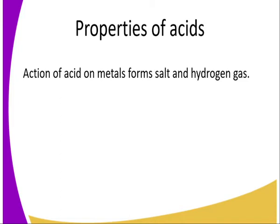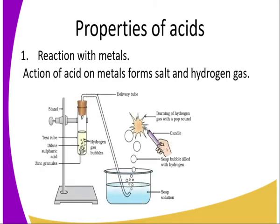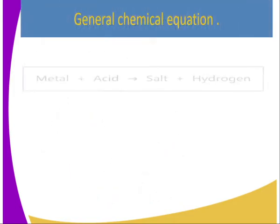Number one: action of acid on metals. Acids react with metals forming salt and hydrogen gas. The following setup can be used to illustrate how acids react with metals. For instance, we have dilute sulfuric acid in a boiling tube with zinc granules. We can collect the gas produced using the over-water method, and when ignited, the gas burns with a pop sound, indicating that the gas produced is hydrogen gas.